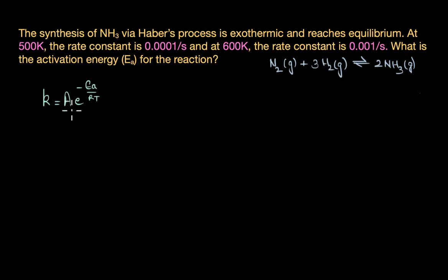Ea is the activation energy that we need to find out. It represents the minimum energy barrier that the reactants must overcome in order to form products.